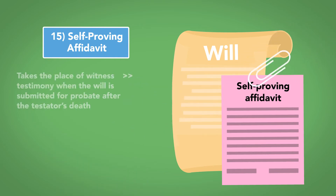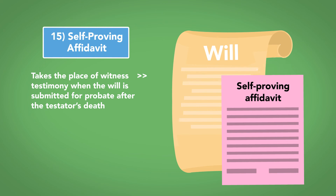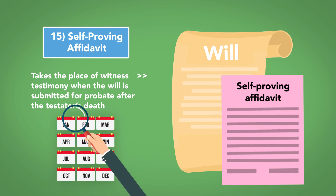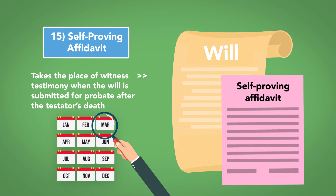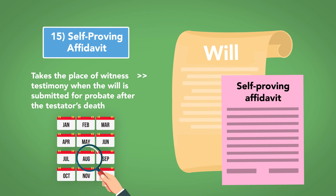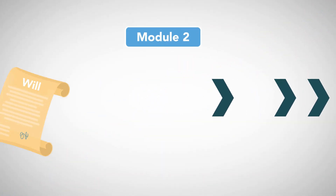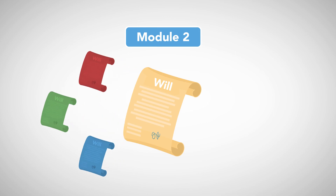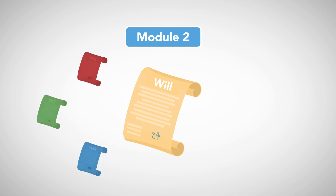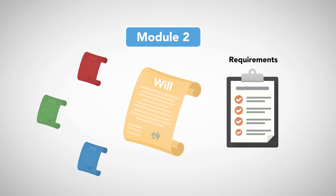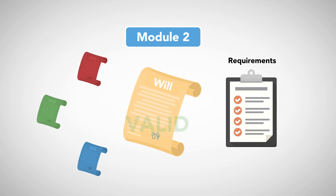Number 15: Self-Proving Affidavit. Most states allow some version of a self-proving affidavit to be attached to a will. In the affidavit, witnesses testify under penalty of perjury that the will has been voluntarily created and is validly executed. This affidavit, when attached to a will, takes the place of witness testimony when the will is submitted for probate after the testator's death, thereby easing the burden and cost of locating the original witnesses, often many years after it is signed. In our next module, we'll continue our discussion of wills with an overview of the types of wills and an in-depth discussion of the requirements for validity.